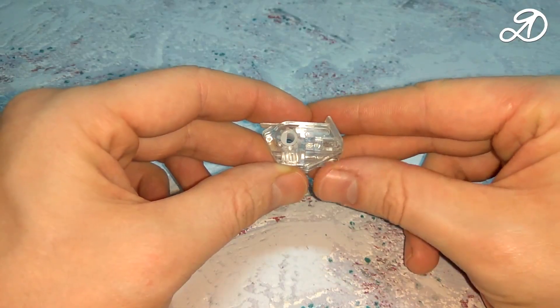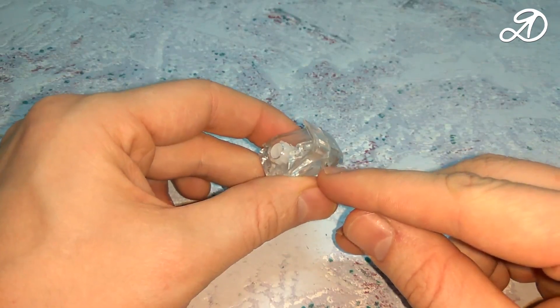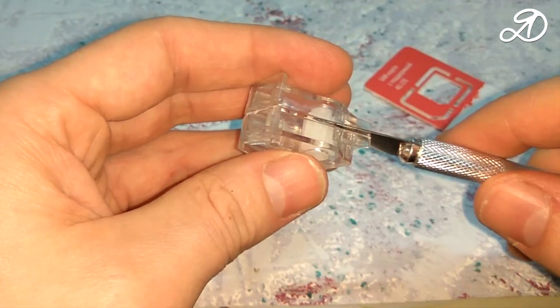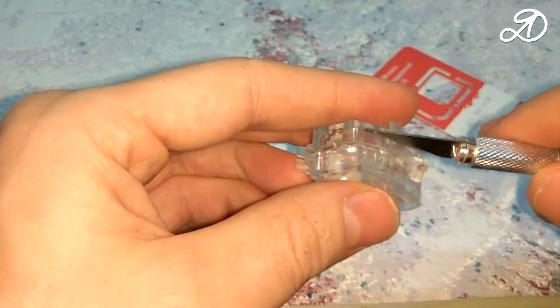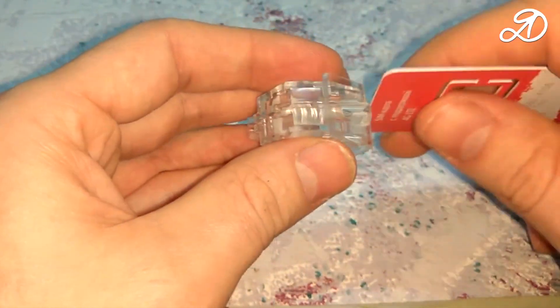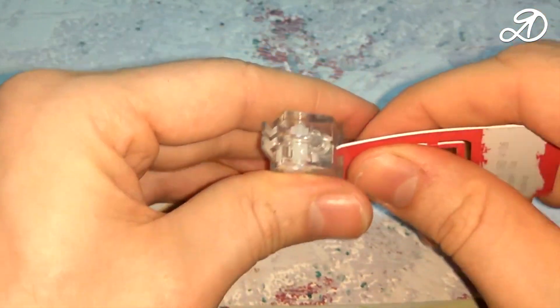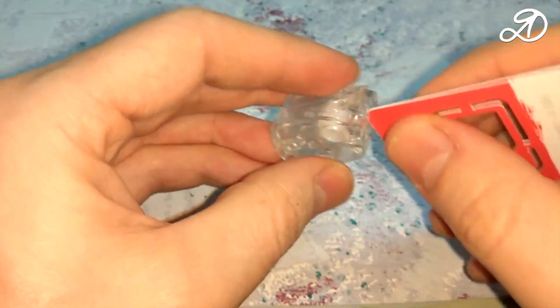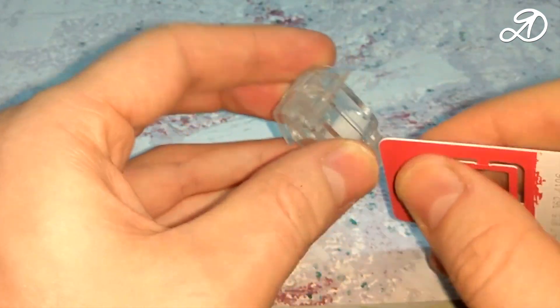Therefore, I will disassemble the model and print. Disassemble the worm gear housing. First I use a scalpel and then a plastic card. Carefully separate the two halves along the perimeter.